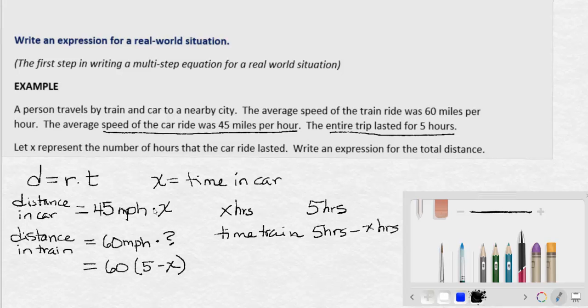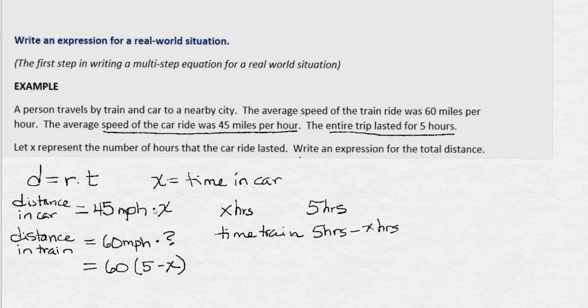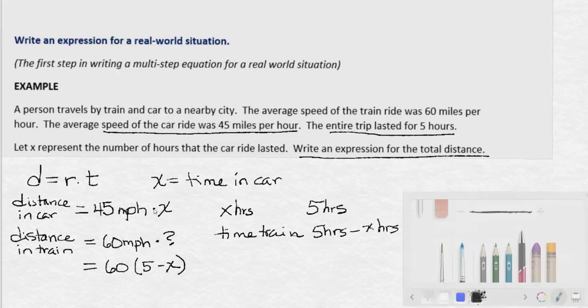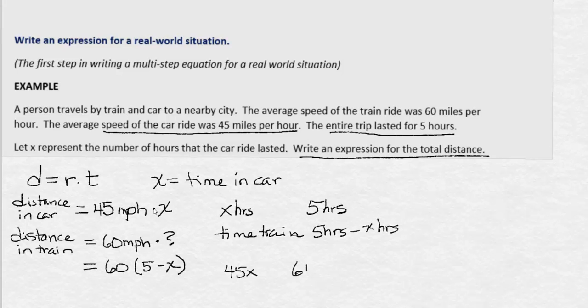Now, let's answer the question that was asked. We were asked to write an expression for the total distance. That means that we need the distance in the car plus the distance on the train. The distance in the car was 45x. The distance on the train is 60 times 5 minus x. We need to add these two together to get the total distance.